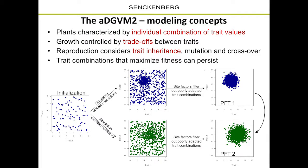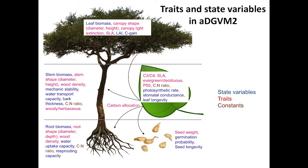This illustrates how ADGVM2 works: we have a trait space with two traits, each dot representing one plant. We randomly initialize the model with a random community. Under different environmental conditions, we end up with different plant communities — different trait strategies that work under the given environmental conditions or disturbance regimes. If we then have climate change, we can have a shift from one community to another. In the model, we have many different traits that are inherited from one generation to the next.